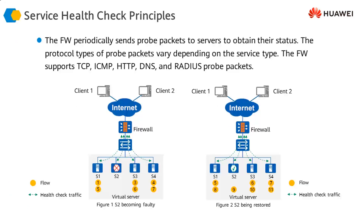The firewall uses health check probe packets for protocols including TCP, ICMP, HTTP, DNS, and RADIUS, sending them to servers in the cluster. As long as responses are received, the servers are considered alive. If a server stops responding, the firewall marks it as down and stops forwarding traffic. If the server comes back, the firewall resumes sending traffic to it appropriately.